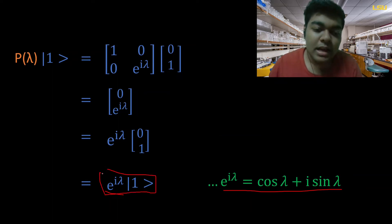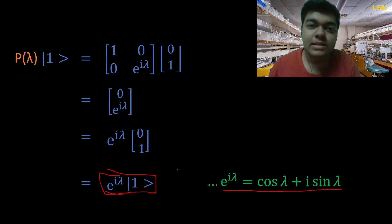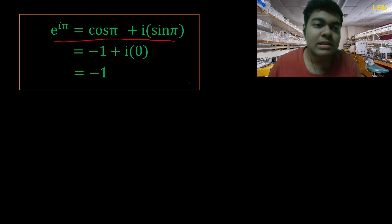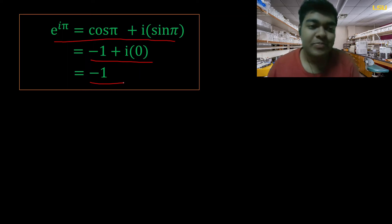The result we have is a general result because it contains the variable λ. Let's try putting λ = π and analyze what we get. Using the Euler identity with π substituted in, we get cos(π) + i·sin(π), which evaluates to minus one. So e^(iπ) = -1.